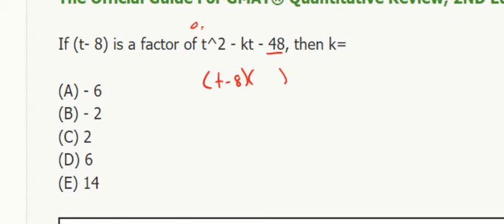So what does the other term have to be? Well, it's going to be minus 48, it's going to be t plus 6. So then, but it actually wants k, that coefficient there, so if I FOIL this, it's t squared minus 2t minus 48.